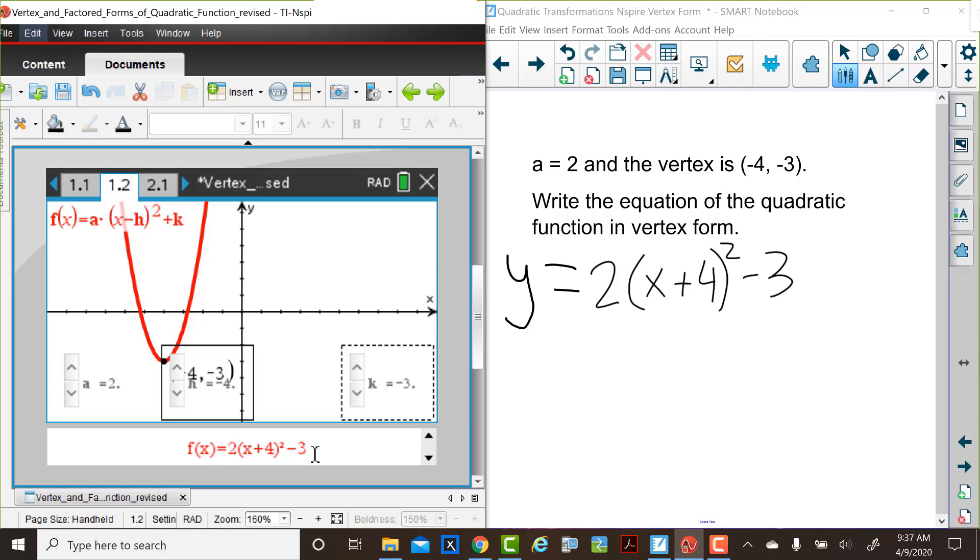f(x) equals 2 multiplied by (x + 4) squared minus 3. And remember, the reason we have x plus 4 is the equation would be f(x) equals 2 multiplied by [x minus (negative 4)] squared plus k. Think about the vertex, (-4, -3).